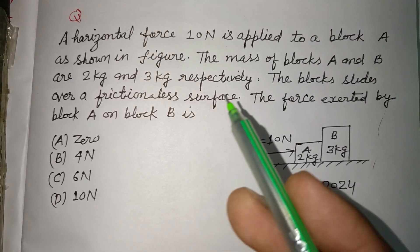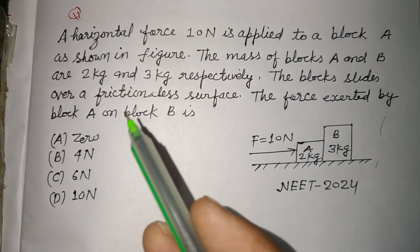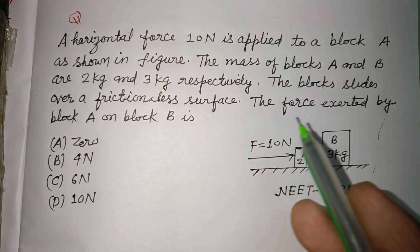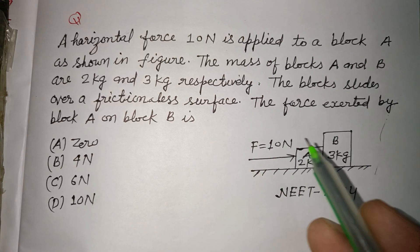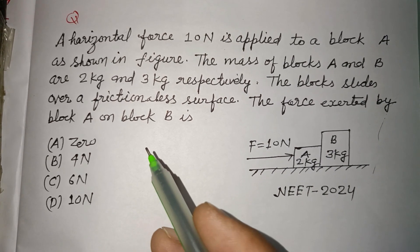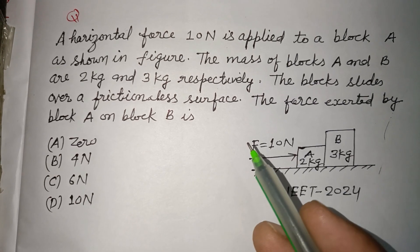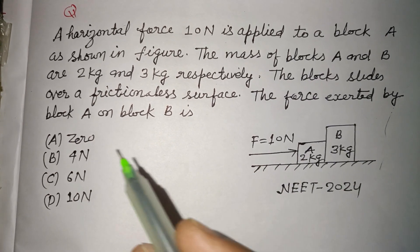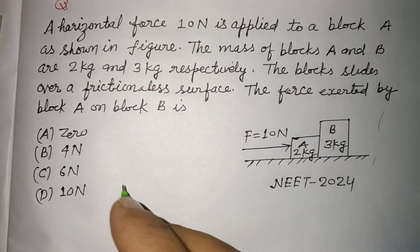A horizontal force of 10 N is applied to block A as shown in the figure. The mass of block A and block B is 2 kg and 3 kg respectively. The block slides over a frictionless surface. We need to find the force exerted by block A on block B.